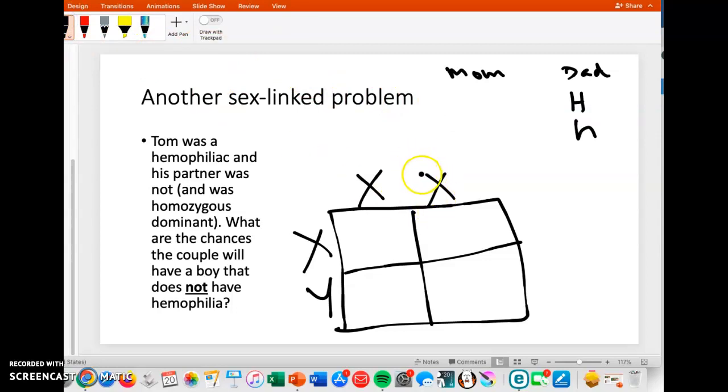If he was hemophiliac, we're going to give him a little h there on that X. And his partner was not and was homozygous dominant. So mom here is homozygous, same dominant, so she is normal. She's got two big H's there, and he has the little h.